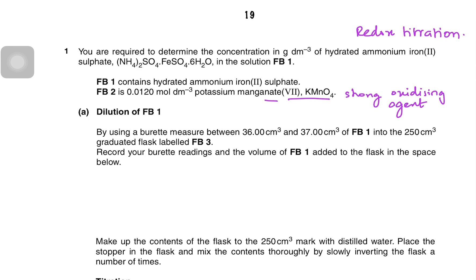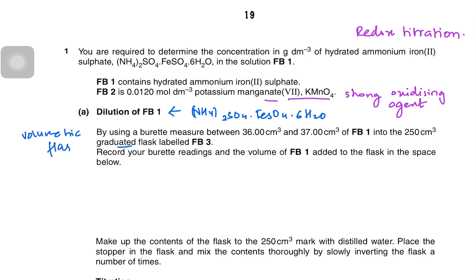For the dilution of FB1 — FB1 is your ammonium iron(II) sulfate salt which was already hydrated. Using a burette, measure between 36.00 cm³ and 37.00 cm³ of FB1 into the 250 cm³ graduated flask. Reminder that the graduated flask is also known as the volumetric flask, as discussed last time.